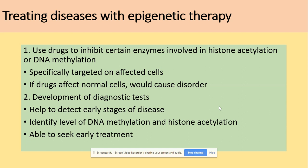Finally, how can we use these epigenetic factors to treat specific diseases? We can use drugs to inhibit specific enzymes involved in acetylation of histones or methylation of DNA. We can target specific affected cells and use drugs to either activate or deactivate the production of specific proteins, since enzymes are proteins. This can also be applied in the development of diet-based therapies.